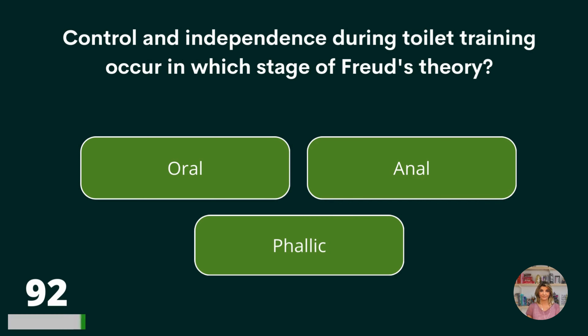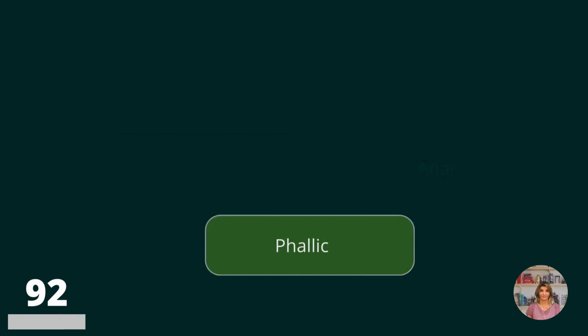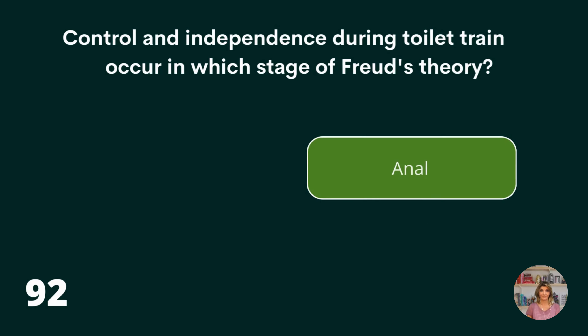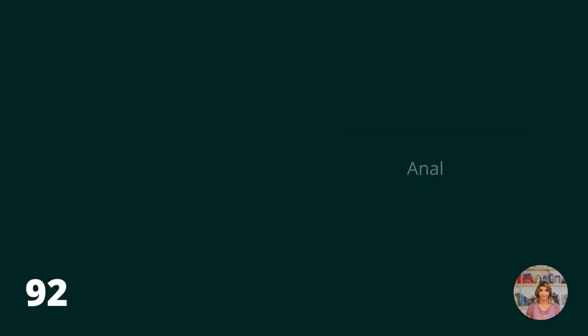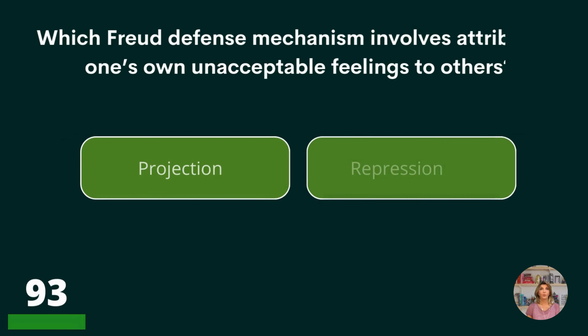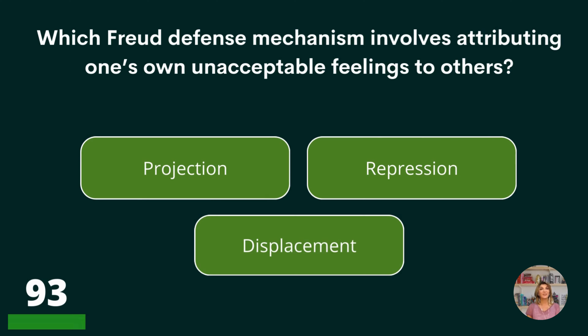Control and independence during toilet training occur in which stage of Freud's theory? Oral, anal, or phallic? Anal.